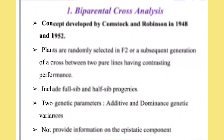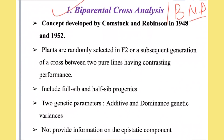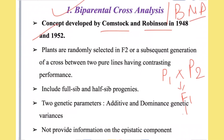Our first analysis is bi-parental cross analysis, also known as bi-parental mating design. This concept was first developed by Comstock and Robinson in 1948 and 1952. In this cross analysis, plants are randomly selected in the F2 generation. Starting from two pure-line parents with contrasting characters, we cross them to get F1, then self F1 to get the F2 generation and subsequent generations.